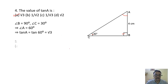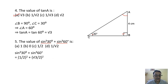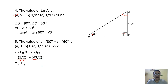Question 5: sin²30° + sin²60°. sin 30° = 1/2, sin 60° = √3/2. Substituting: 1/4 + 3/4 = 4/4 = 1. The correct option is option A.